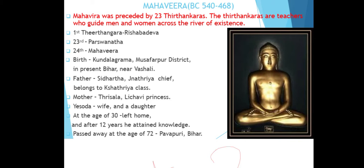Trishala belonged to the Lichwi tribe and was a Lichwi princess. His wife was Yashoda. He had a daughter, and at the age of 30 he left home. After 12 years of roaming from place to place, he attained enlightenment.